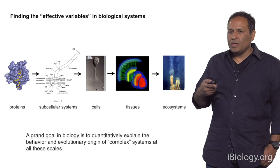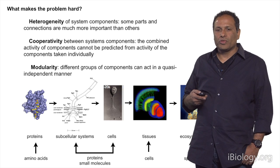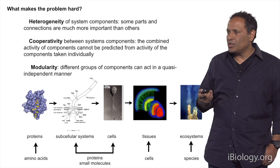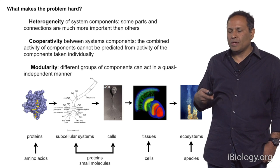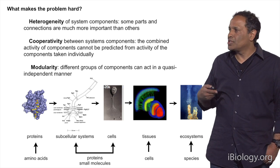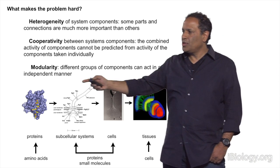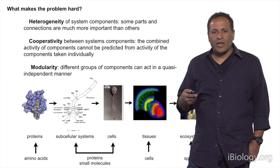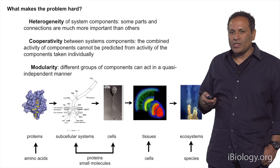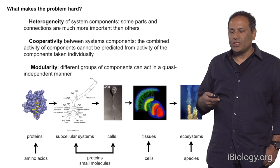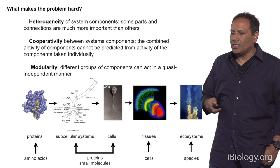A goal is to explain the behavior and origin at all these scales, but the problem is difficult for three reasons. The first is the problem of heterogeneity. In all these scales, system components are highly heterogeneous, where some parts and connections are much more important than others. For example, in proteins, not all amino acids act equally — there's a heterogeneity in the importance of amino acids towards central properties like foldability and biochemical function.